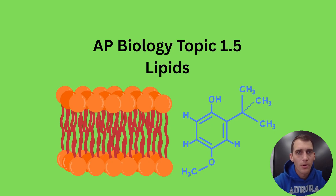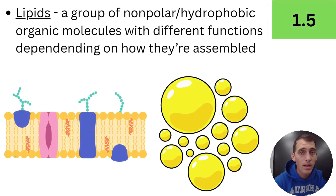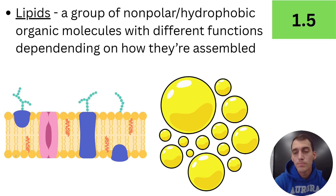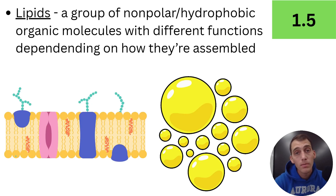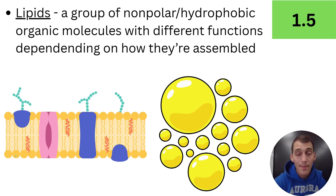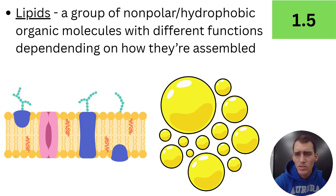The thing that ties lipids all together is that they're all nonpolar or hydrophobic organic molecules. They have different functions depending upon how they are assembled, so how they are put together determines their function — there's your structure and function theme again. They have a wide variety of functions, but the main thing they have in common is that they're all nonpolar or hydrophobic. Remember from 1.1, water is a polar molecule — it has polar covalent bonds, a slightly negative side, a slightly positive side. All the molecules we're talking about in this topic are nonpolar, which means they don't interact with polar substances.